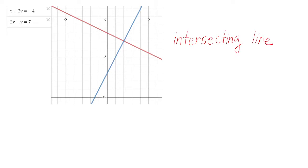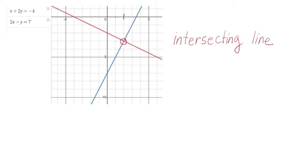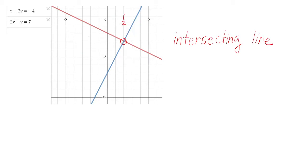Let us focus on the point of intersection. What are the coordinates of this point? What is the value of x? The value of x is 2. What about the value of y? Negative 1, negative 2, negative 3 — so this is negative 3. The point of intersection is (2, negative 3), which is what you call the solution.